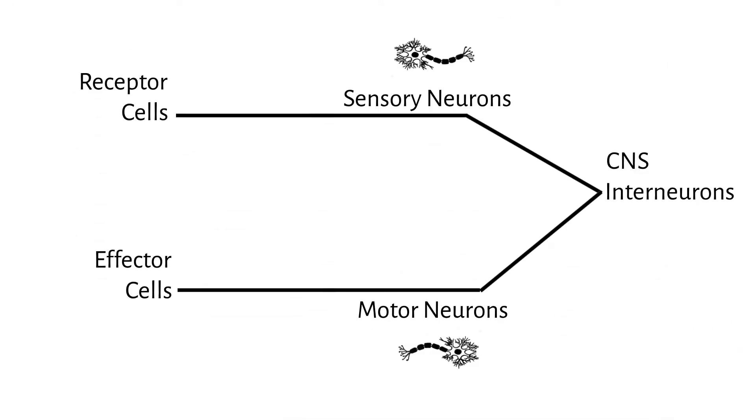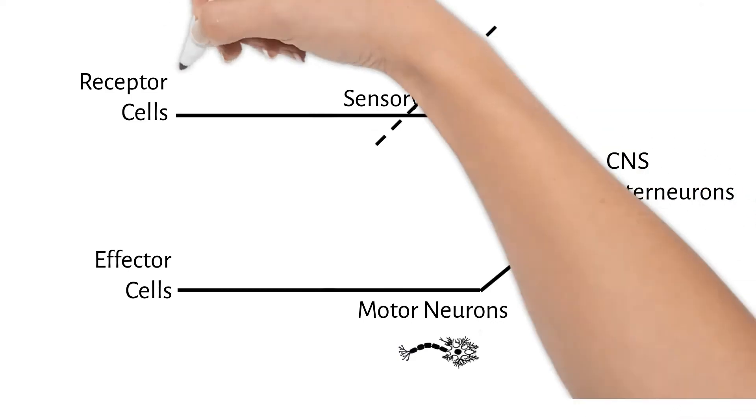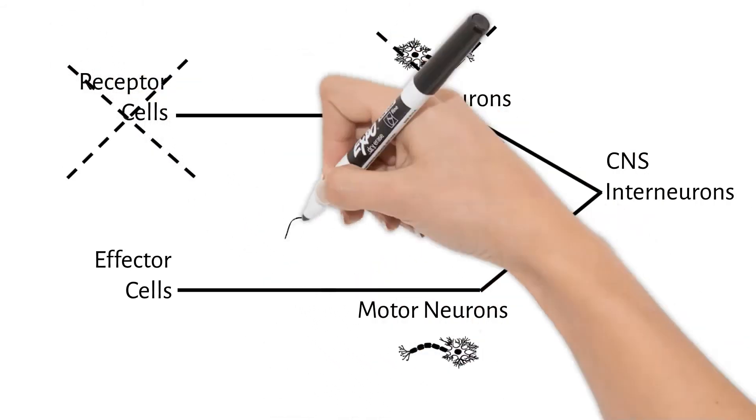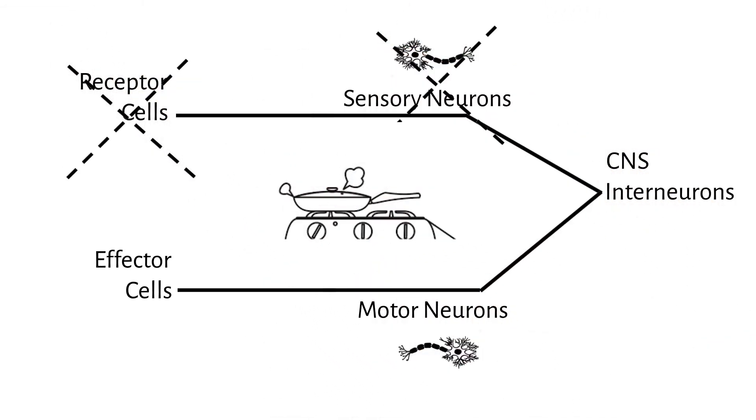Looking back at our diagram, there could be a problem anywhere along this path. If your sensory neurons or receptors were damaged, you wouldn't feel the pain of touching a hot stove. No information is passed to the CNS.